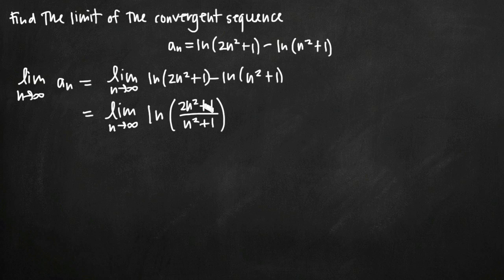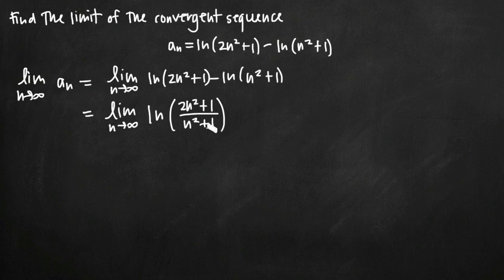Now it's just a matter of finding the limit as n goes to infinity. Whenever you have a rational function with a polynomial in the numerator and the denominator, the best way to find the limit as n goes to infinity is to divide every term in both the numerator and denominator by 1 over the n value with the greatest degree. n squared is the largest degree here. We want the largest one present in either the numerator or denominator. In this case they match, so n squared is the value we'll divide through by.